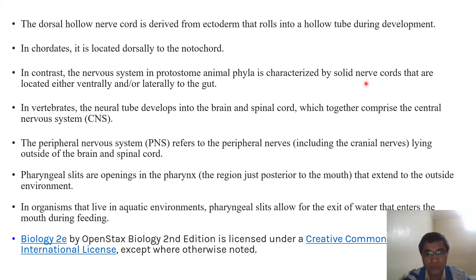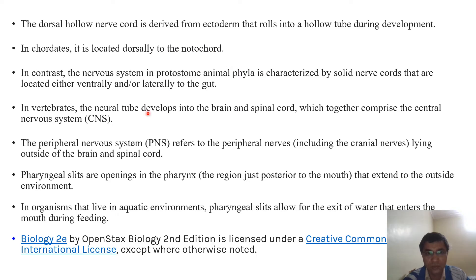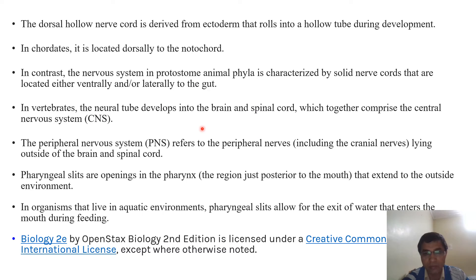In protostomes, the nervous system is characterized by a solid nerve cord which is basically located in the ventral site or lateral to the gut. But in chordates, you will see that the part of the nervous system is located in the dorsal site — this is the spinal cord located in the dorsal site, inside the notochord and inside the vertebral columns.